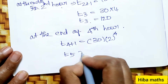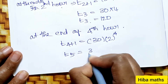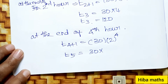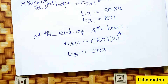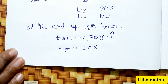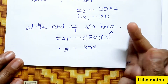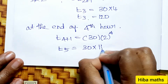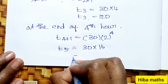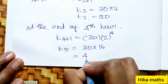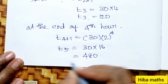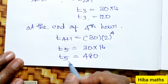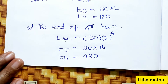At the end of the 4th hour, T(5) = 30 · 2⁴. Calculating 2⁴: 2×2=4, 4×2=8, 8×2=16. So T(5) = 30 · 16 = 480. At the end of the 4th hour, there are 480 bacteria.